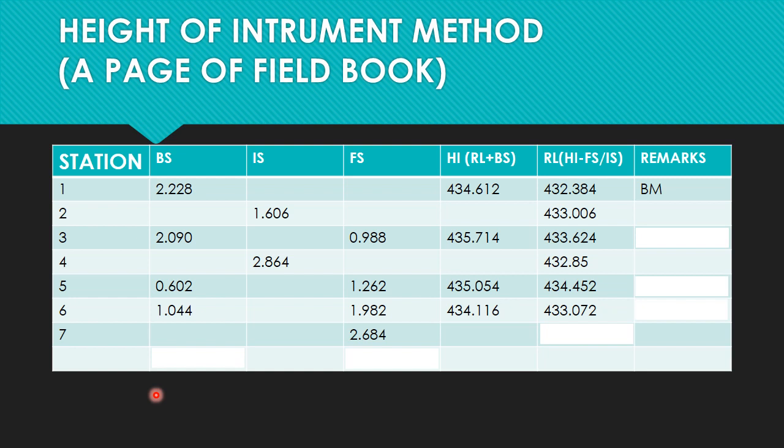For station seven, the reduced level is the height of instrument 434.116 minus the foresight 2.684, which gives us 431.432. We have now calculated all the reduced levels.